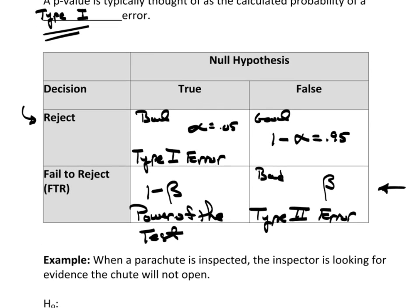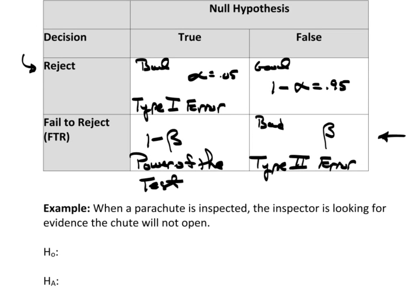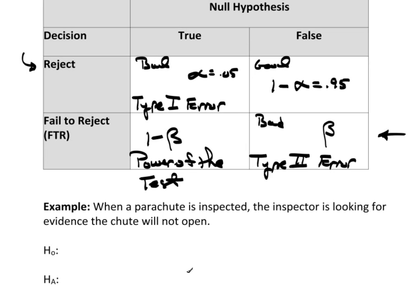So, let's take a look at a couple of setups here. First example, when a parachute is inspected, the inspector is looking for evidence the chute will not open. So, what would the null hypothesis be? Well, the status quo is that the chute opens. So, the null hypothesis would be chute will open. And your research hypothesis, which you're looking for evidence, is to show that the chute will not open.